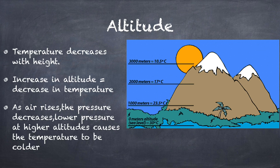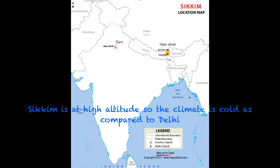Lower pressure at higher altitude causes the temperature to be colder. For example, New Delhi and Sikkim are at the same distance from the equator, but there is still a difference in their climate. Sikkim is at a high altitude, so its climate is cold compared to Delhi, which is in the plains.